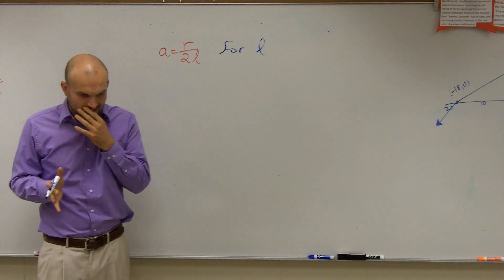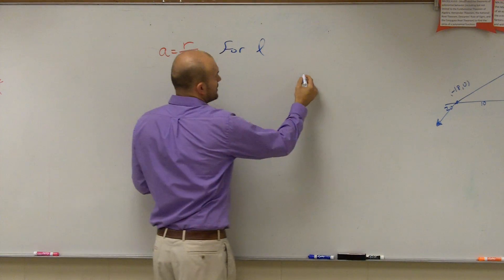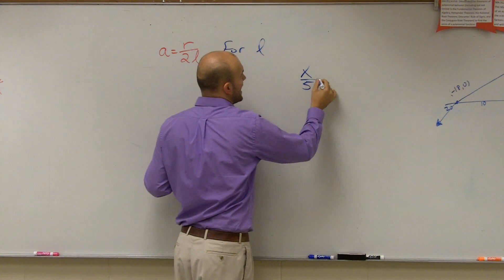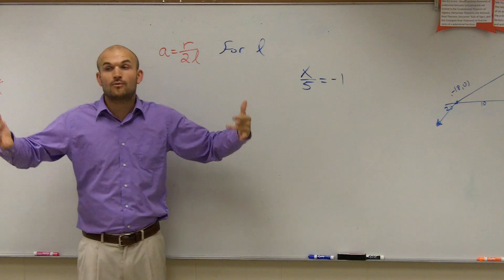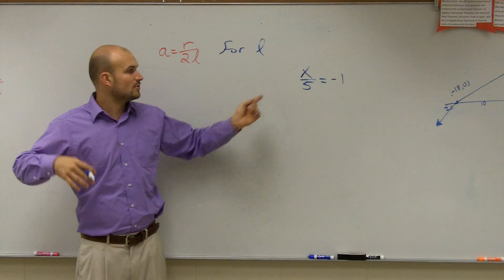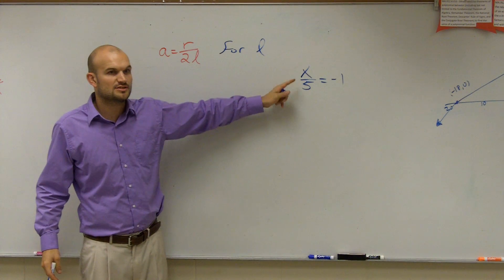So to do this problem, ladies and gentlemen, there's a couple things I just want to relate with you. Let's take a look at x over 5 equals negative 1. If I needed to solve for x, we always look at what's happening to our variable. So what's happening to my variable here?